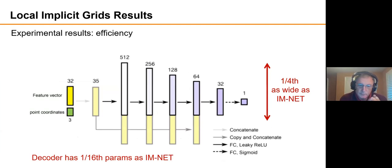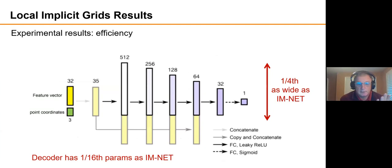And then comparing to a global implicit learned decoder, our method can be more efficient because the network that's required to decode, the network that's being used to decode the latent vectors, can be much smaller if all they have to do is encode a shape space that is for a small grid cell as opposed to entire objects.